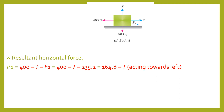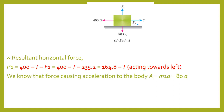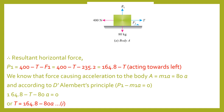The reason 400 N is positive and T and F1 are negative is that the body is moving towards the left, and we are finding the force responsible for that movement. The force causing acceleration is mass × acceleration, here 80 × A. Using D'Alembert's Principle: P1 − M1 × A = 0. Substituting the values, we get Equation 1: T = 164.8 − 80A.